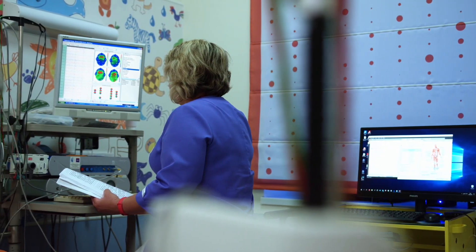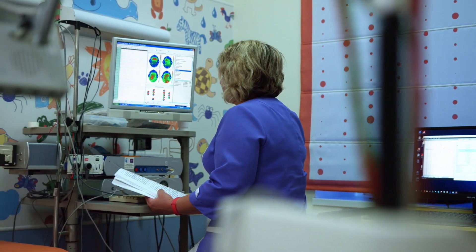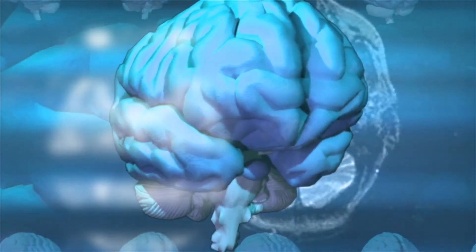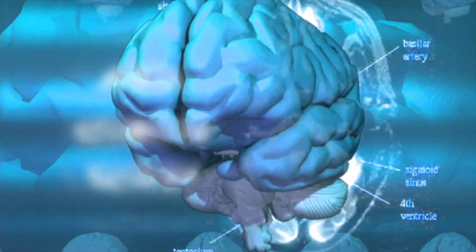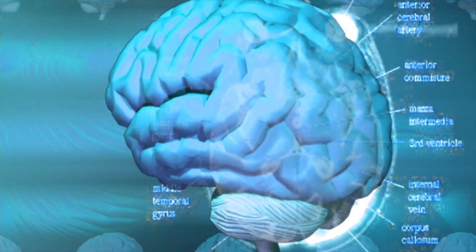Two studies of the brain's gross anatomy found that Einstein's parietal lobes, possibly linked to his remarkable ability to conceptualize physics problems, had a very unusual pattern of grooves and ridges.